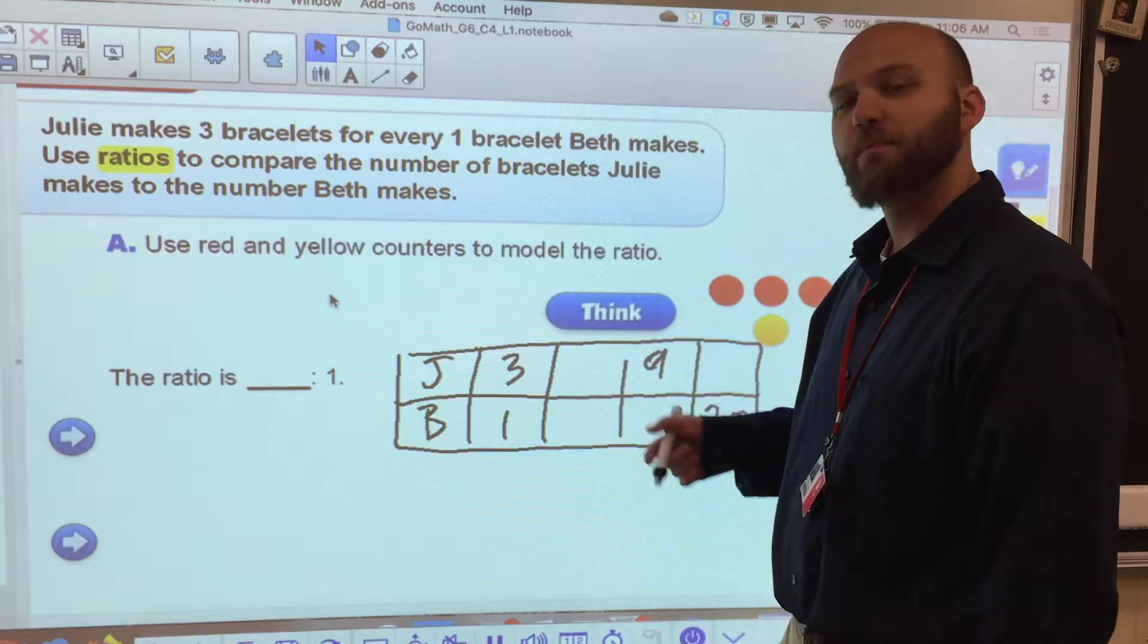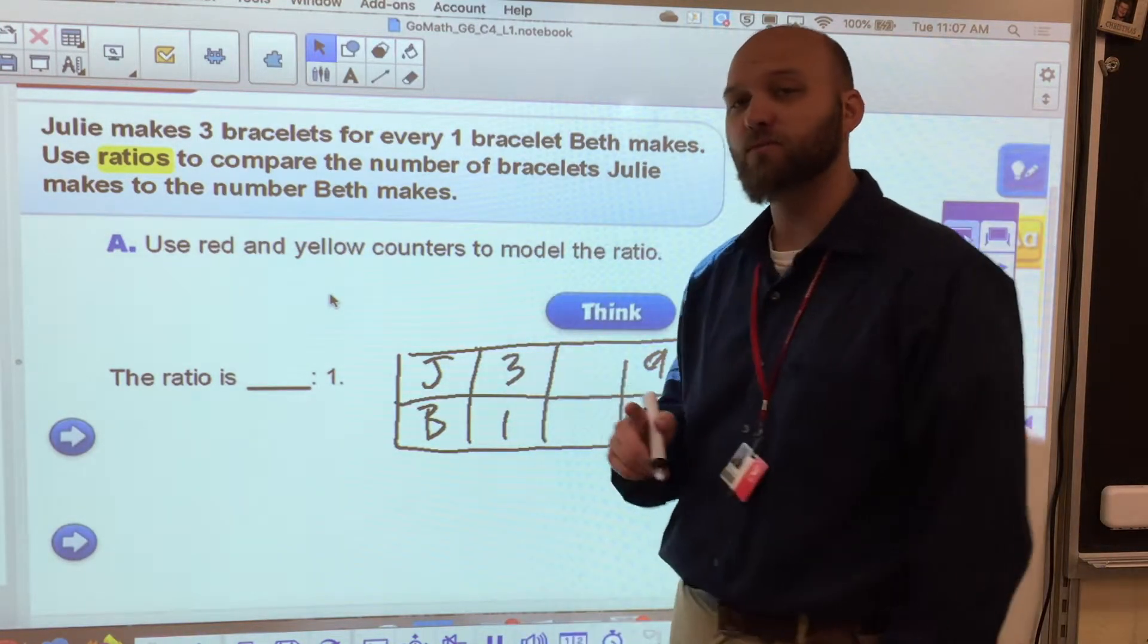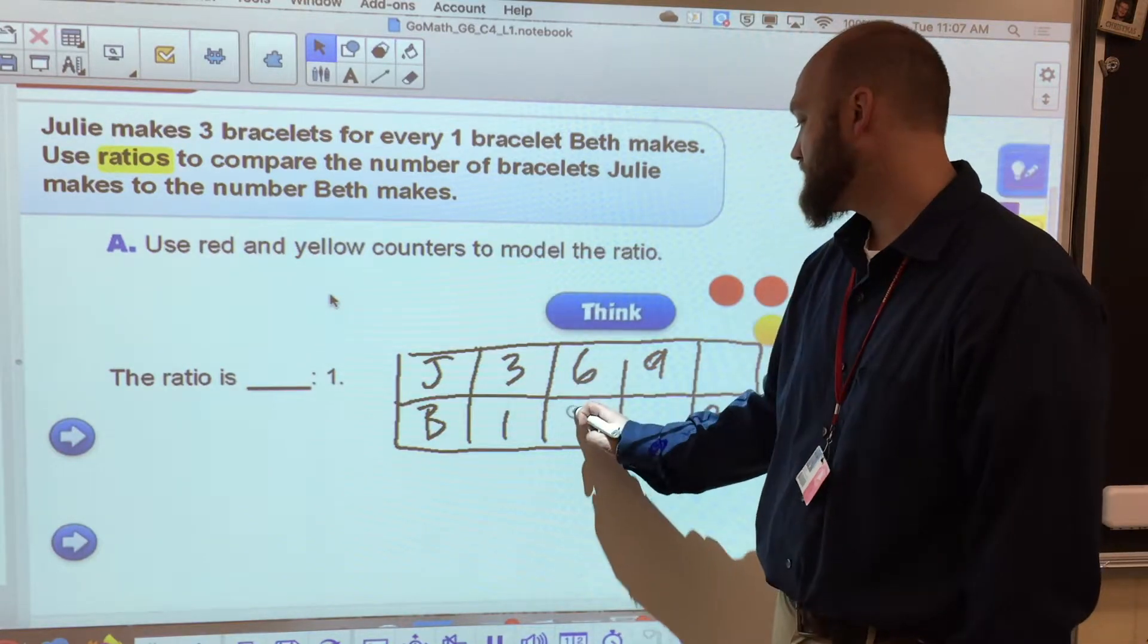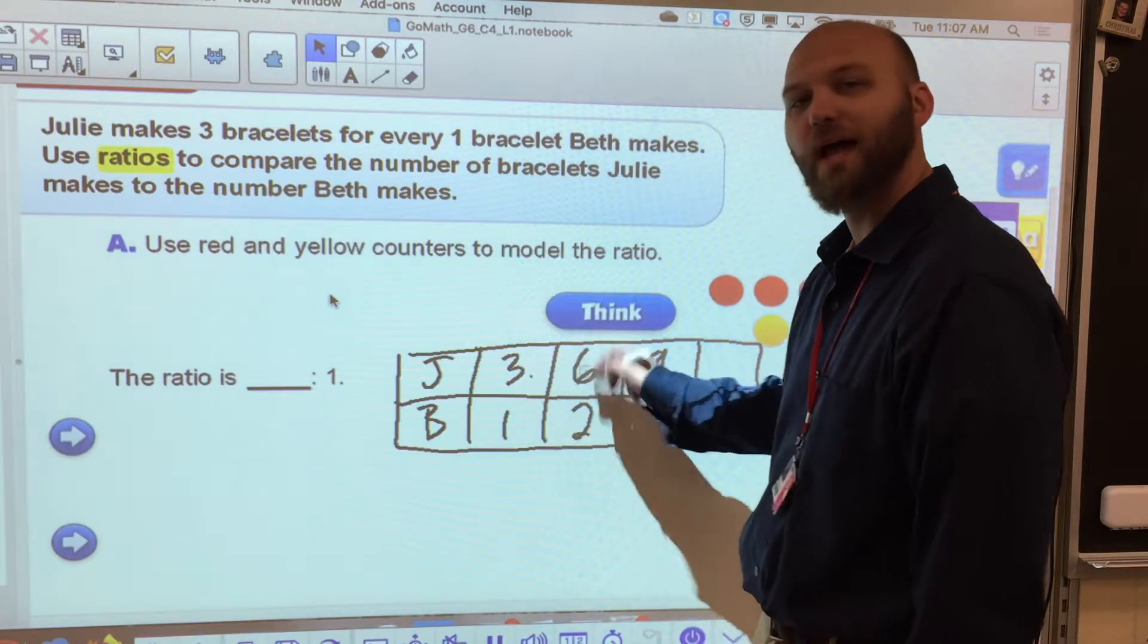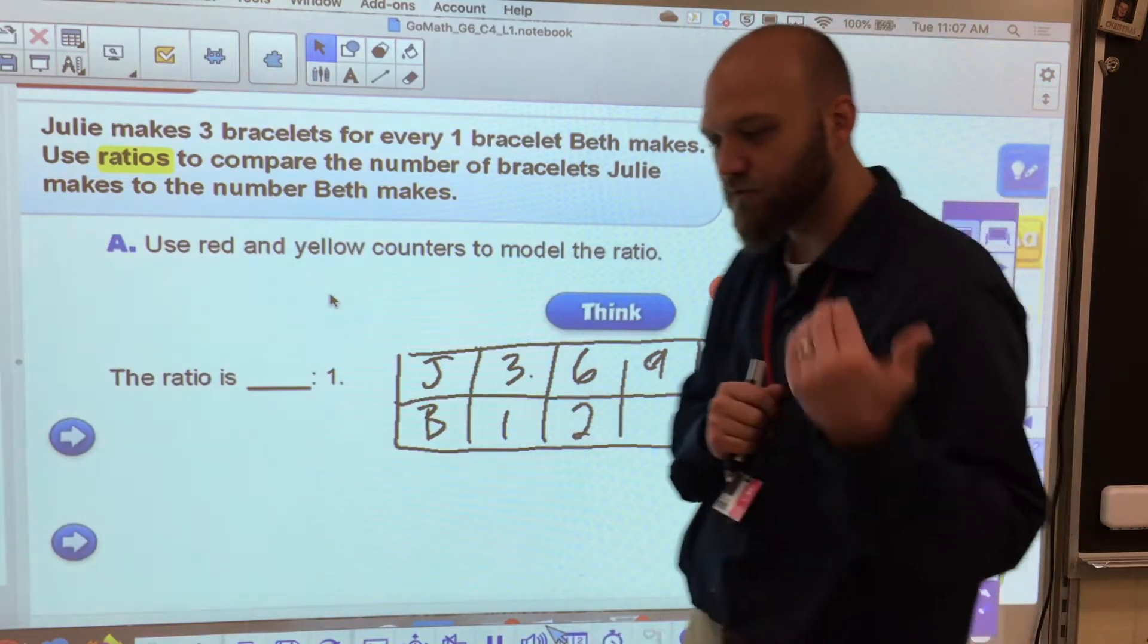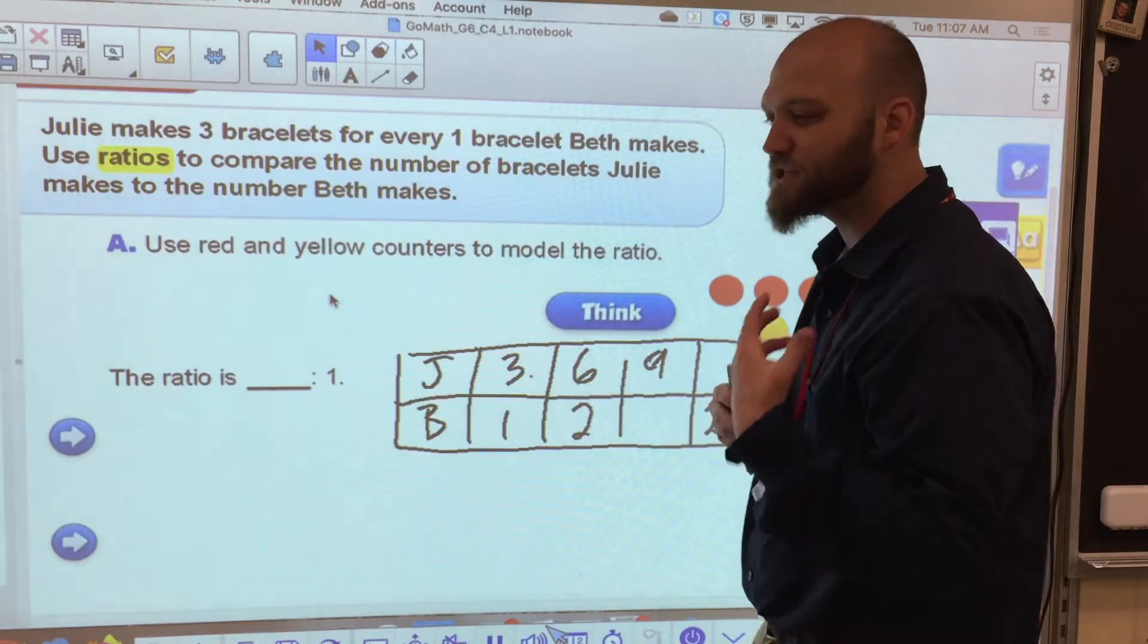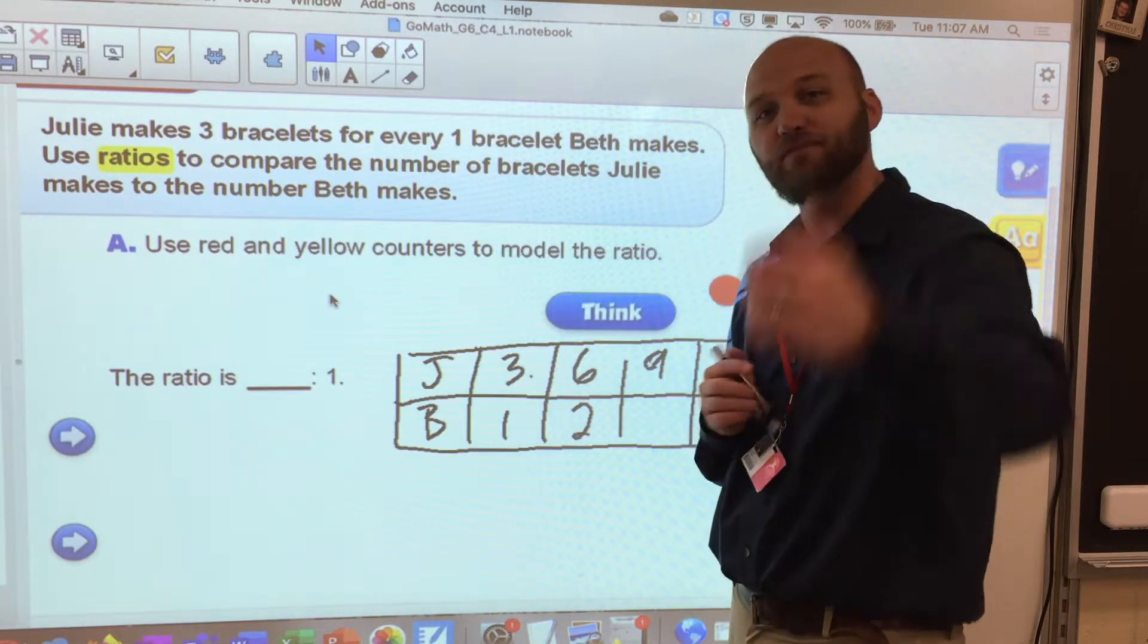If I were looking for the next step I might say, well if Julie makes three bracelets, Beth makes one. If Julie makes six bracelets, Beth makes two. In other words, whatever I multiply one by, I have to multiply the other by because they're just going to double that section. And this holds true for our fractional equivalents, right? They're equivalent fractions and we know that anything we do the top we have to do the bottom, anything we do the bottom we have to do the top.